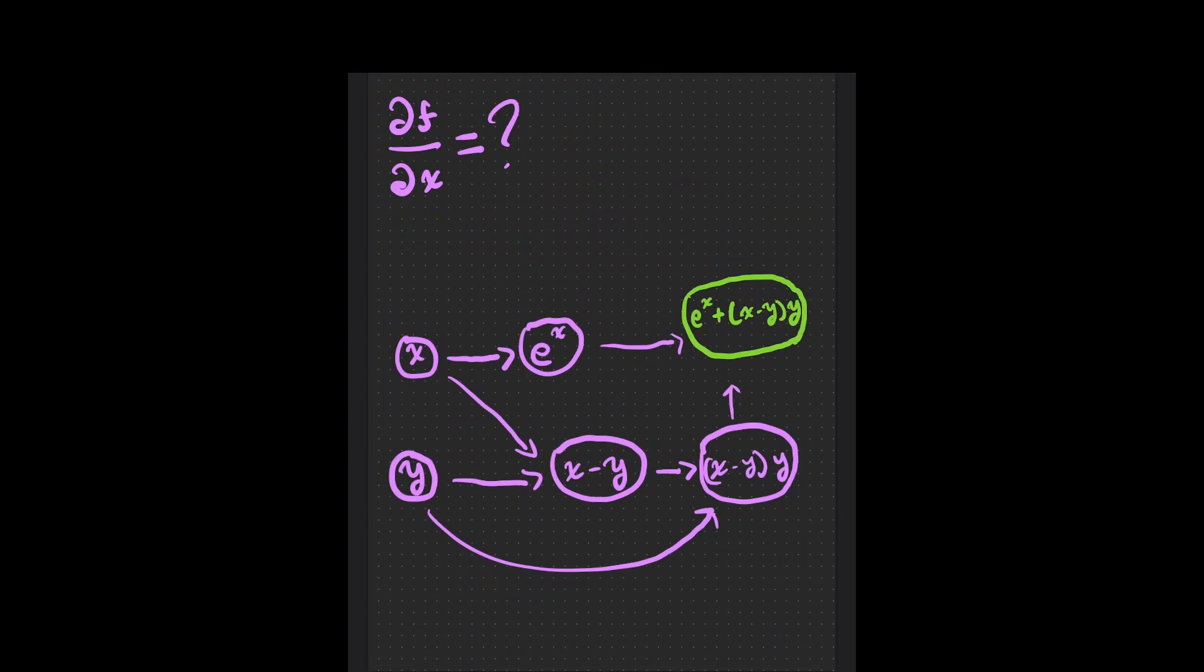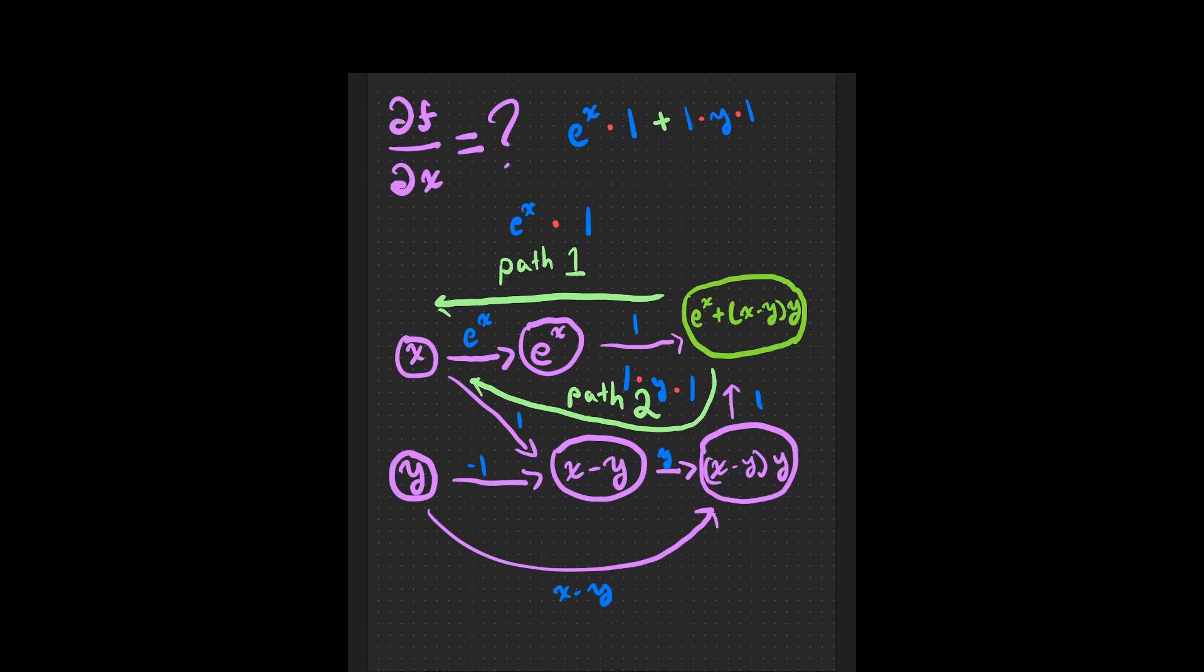Now, how do you find the derivative of f with respect to your inputs? It's easy. You find every path in the graph from x to the input, and you sum the derivatives from that path. Wait, how do you find the derivative from a path? Well, you just multiply the local derivative between each edge in that path.